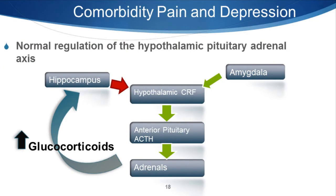Another thing that we see common in both of these diseases is dysregulation of the hypothalamic pituitary axis, and we see dysregulation of the hypothalamic thyroid axis as well. In this particular cartoon, what we're seeing is both the hippocampal region, an area responsible for memory processing in the central nervous system, has an inhibitory impact in terms of the hypothalamic area.